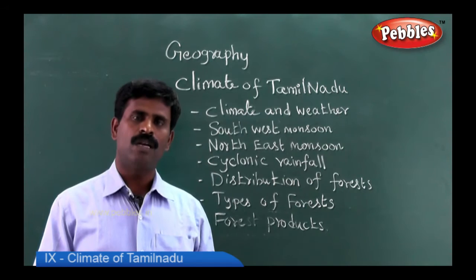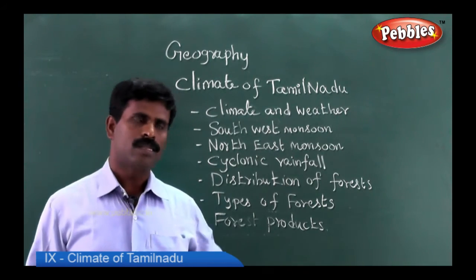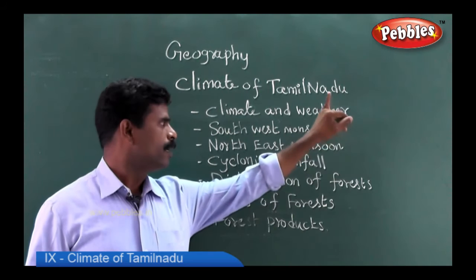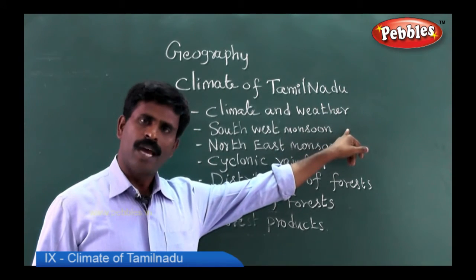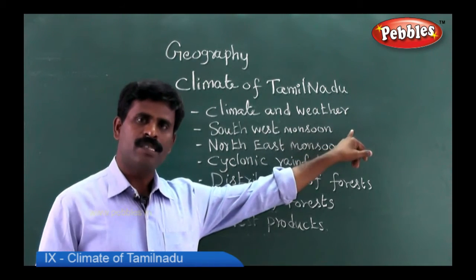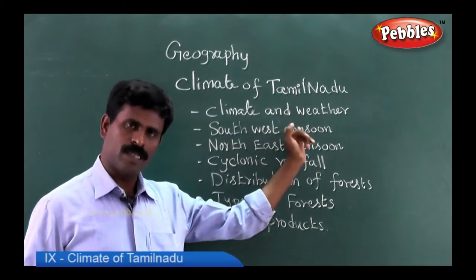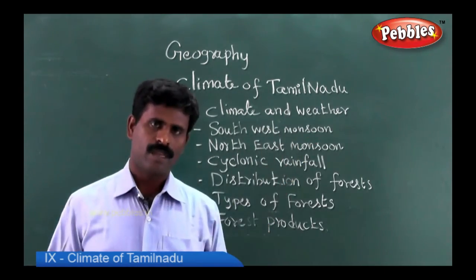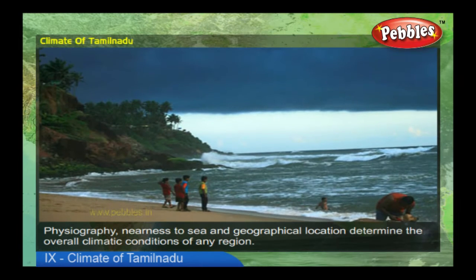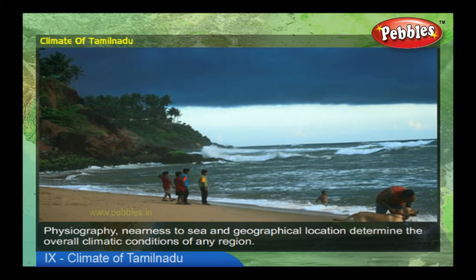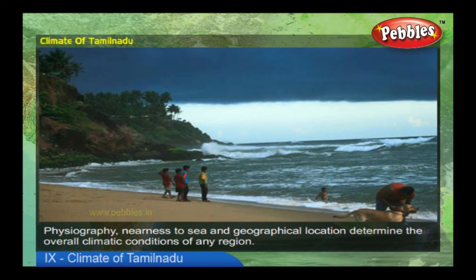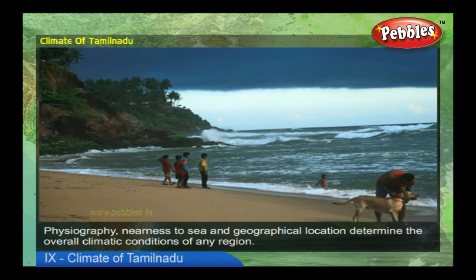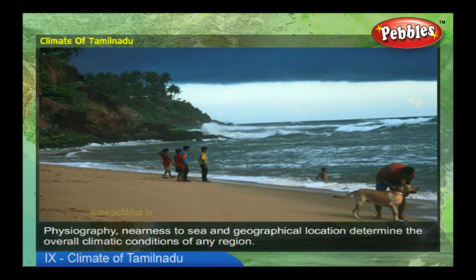Most of the rainfall received by Tamil Nadu is from these two monsoon seasons. Kanyakumari alone benefits from both the southwest monsoon and the northeast monsoon. Physiography, nearness to sea, and geographical location determine the overall climatic conditions of any region.